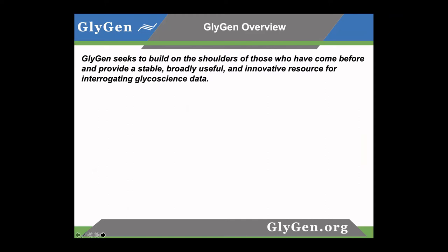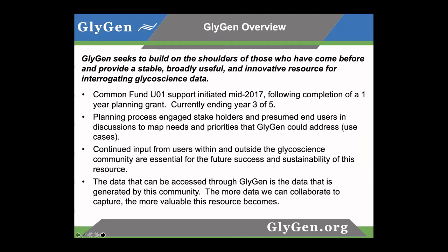What we do at GlyGen is build on the shoulders of those who have come before us, use the tools already developed, and bring these things together into a stable, broadly useful, innovative resource for interrogating glycoscience data. GlyGen is funded by the U.S. National Institutes of Health Common Fund, U01 mechanism. This support was initiated in mid-2017, after a year of a planning grant that was essential for launching GlyGen towards usefulness. We're currently ending the third year of five of our initial round of funding. The planning grant engaged stakeholders and users to ask what they thought the resource could be, what needs and priorities it could address — so-called use cases.